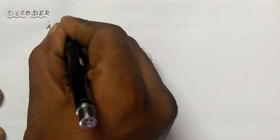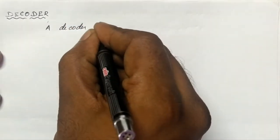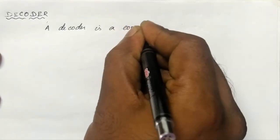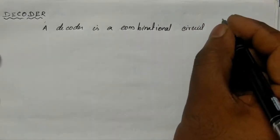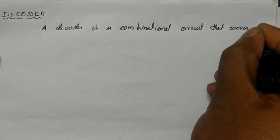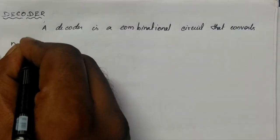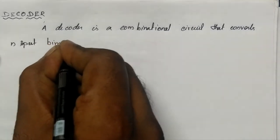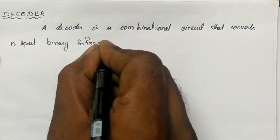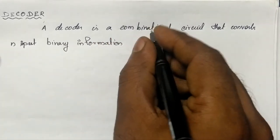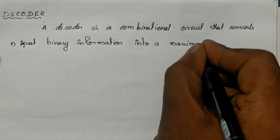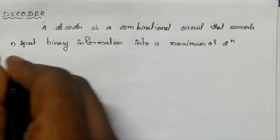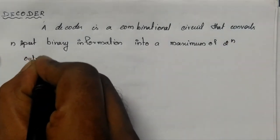Welcome to easylearn. In this video we are going to see decoder. A decoder is a combinational circuit that converts input binary information into a maximum of 2-power-n output lines.